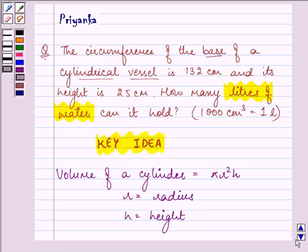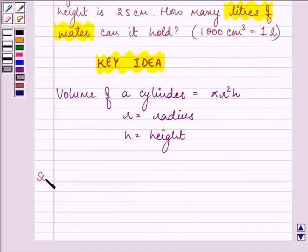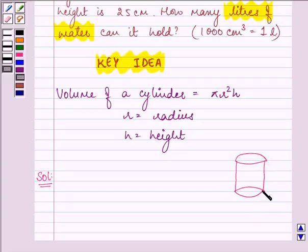Further, now according to this question, there is a cylindrical vessel whose circumference of the base is given to us. Also, we are given the height of this cylinder as 25 cm.